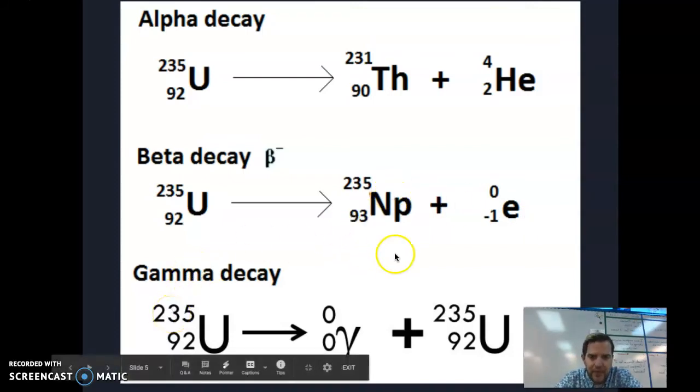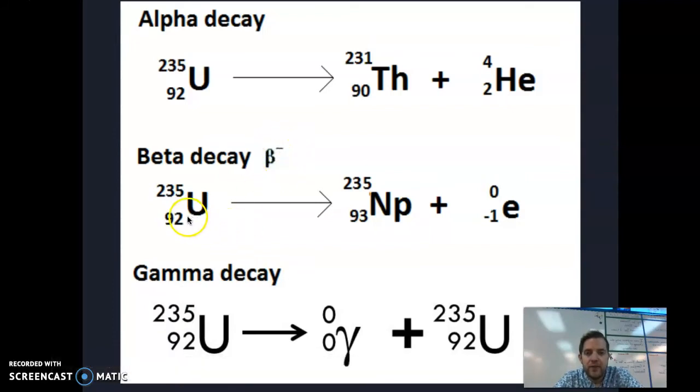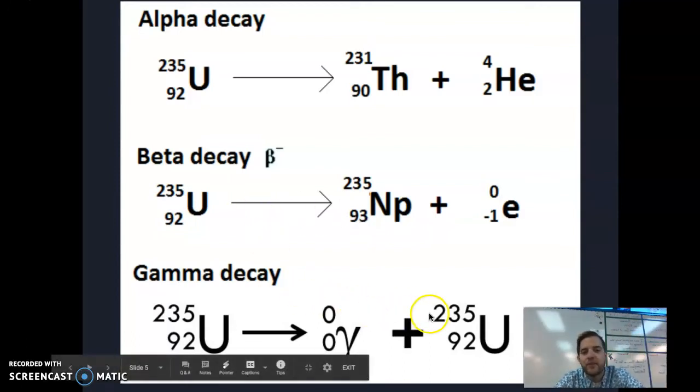If this was beta positive, it would have flipped the other direction. I'd see a positive particle, and this would have gone from 92 down to 91. In beta positive decay, proton number goes down. In beta negative decay, proton number goes up. In gamma decay, neither change—we just notice gamma decay has occurred.